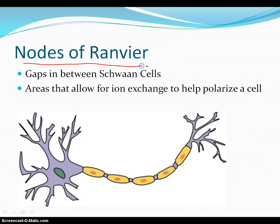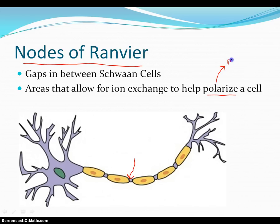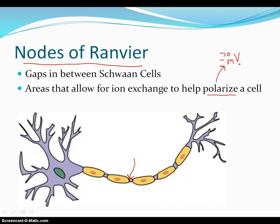The next thing I want to talk about is the nodes of Ranvier. These are gaps in between Schwann cells, and they are areas that allow for ion exchange to help polarize a cell. Polarize means it has the ability to create a charge. Each cell in your body actually has a charge of about negative 70 millivolts. So your cell can fire off a nerve impulse equivalent to about 70 millivolts. You have trillions of nerve cells in your body, so at any given time your body has the ability to produce massive amounts of voltage.